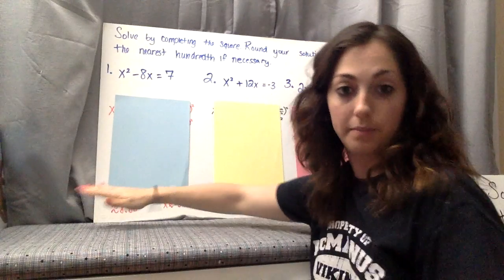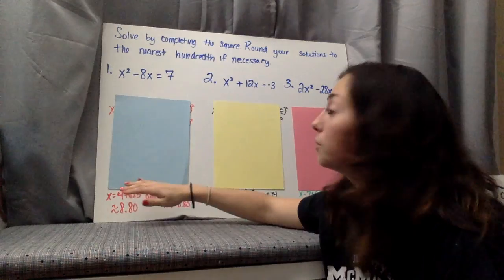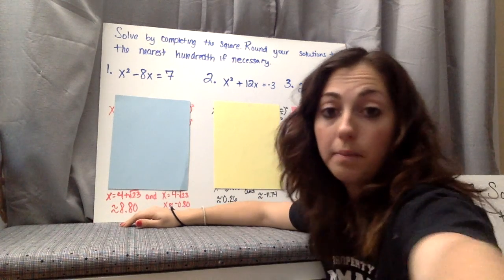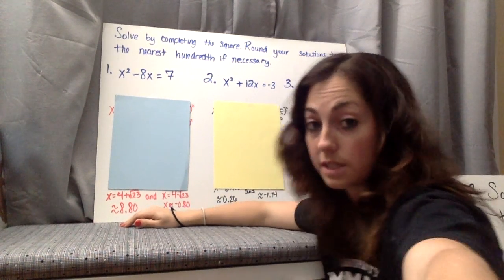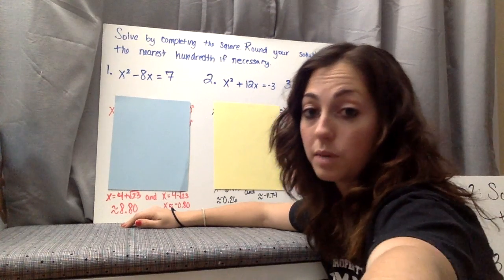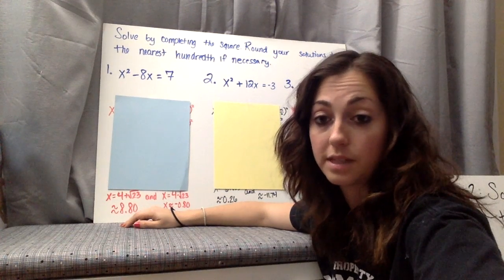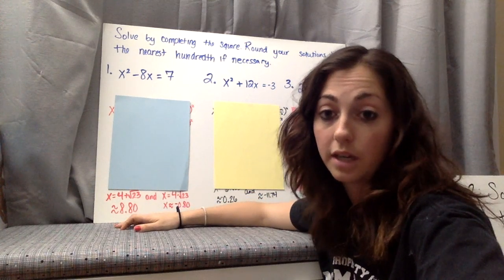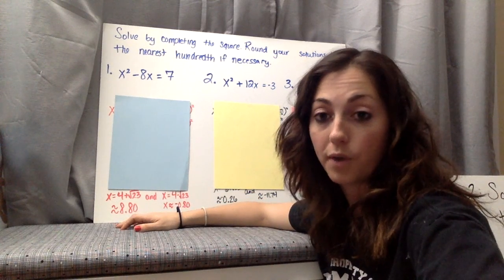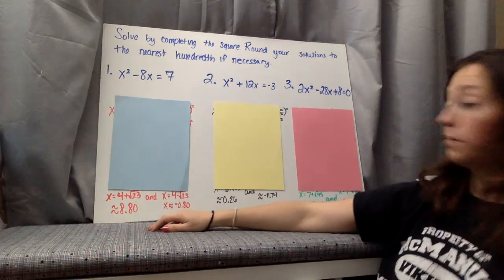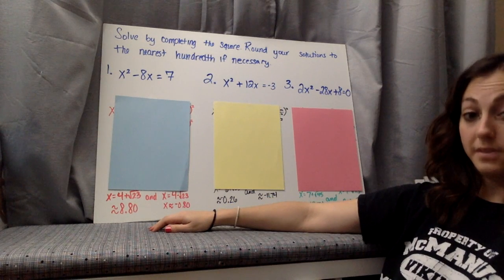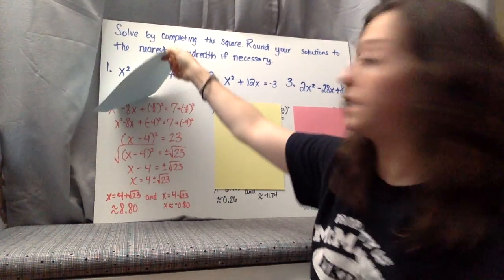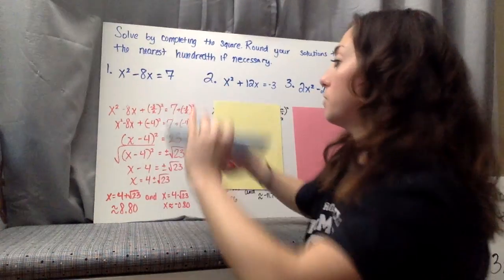If you look at the top three problems, you are solving by completing the square, rounding your solutions to the nearest hundredth if necessary. Write these three problems, try them, pause the video, and then see if you got them right. Here are all three problems — pause the video, try them all, then let's work on each one.